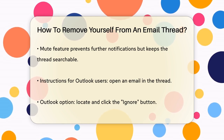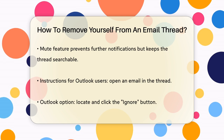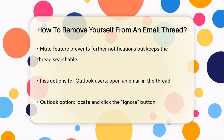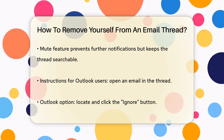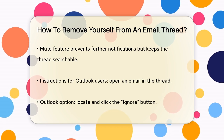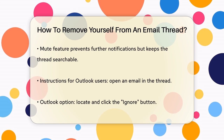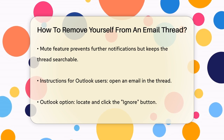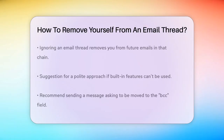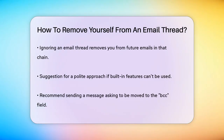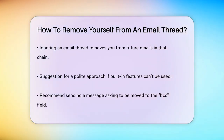For Outlook users, the solution is just as straightforward. Open one of the emails in the thread and look for the Ignore button. This button is usually found in the same area where you'd find options like Reply or Forward. Clicking Ignore will remove you from the email chain, and you won't receive any more emails from that thread.